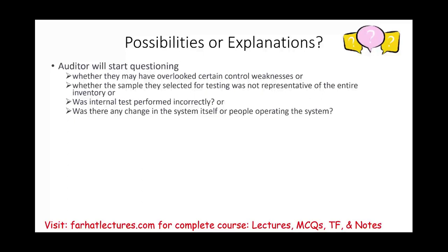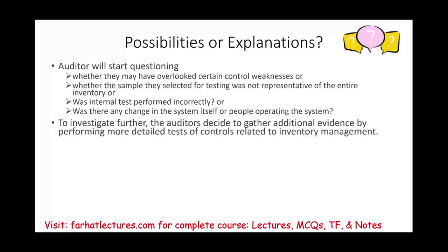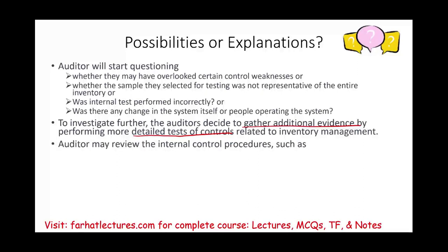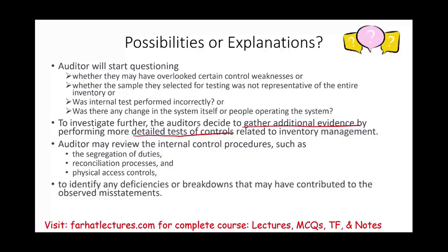Other possible explanations include: the sample selected was not representative, the internal tests performed were incorrect from the beginning, or there was a change in the system or in the people operating the system. We need to investigate further until we get to the right answer — understanding why and what went wrong. The auditor will decide to gather additional evidence by performing more detailed tests of control related to inventory.